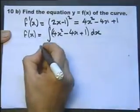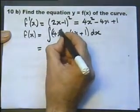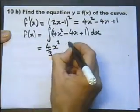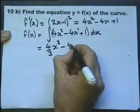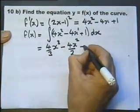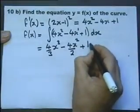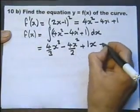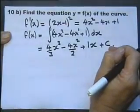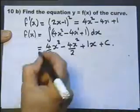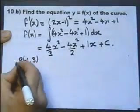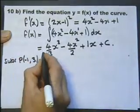So let's do the integration. That's the power — I raise the power by 1 and divide by that new power. Little power of 1 there, raise that by 1 power and divide by the new power. And if you integrate a number then the x reappears. Plus the constant of integration. Now we can work out the constant of integration if we know a point that the graph passes through. It tells me that it goes through point P with an x-coordinate of minus 1 and a y-coordinate of 3, so let's substitute those values in.